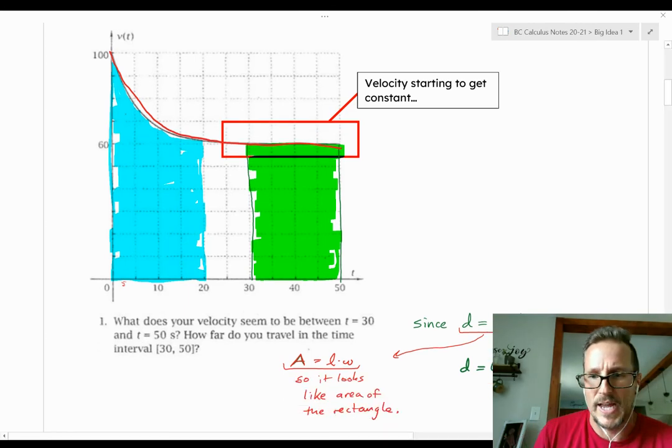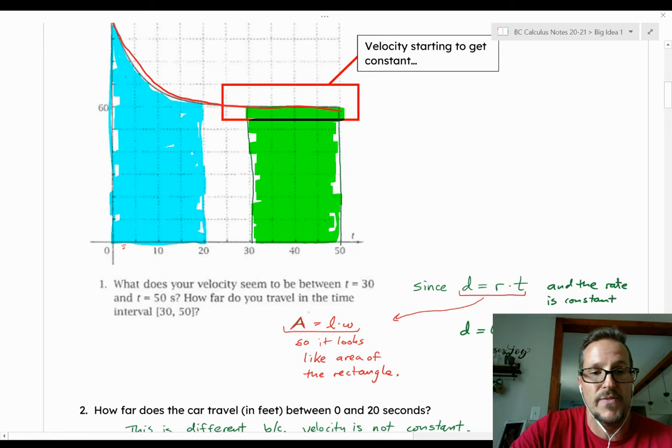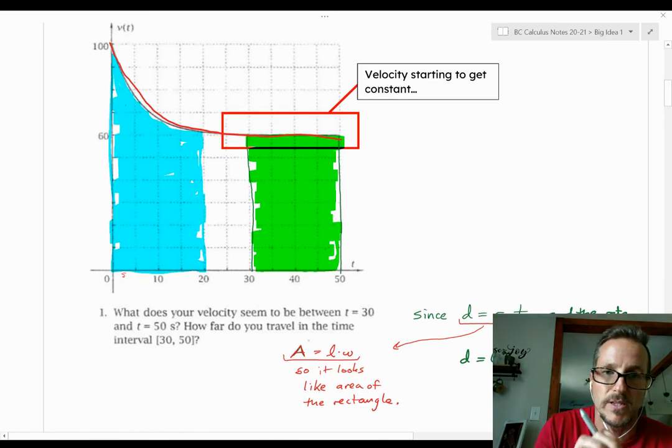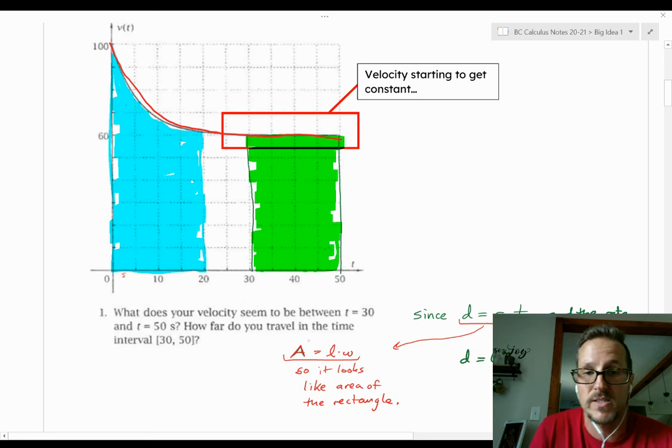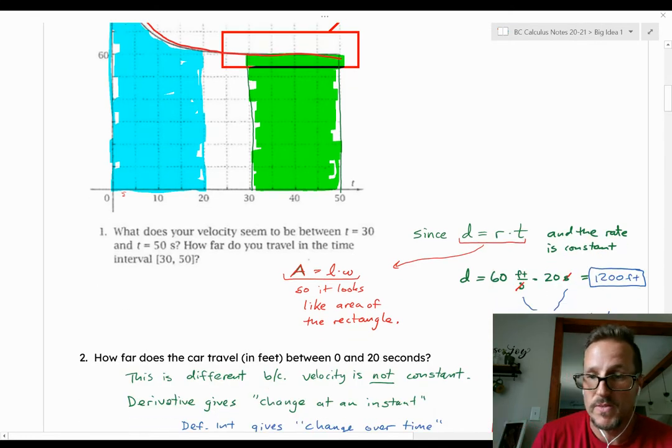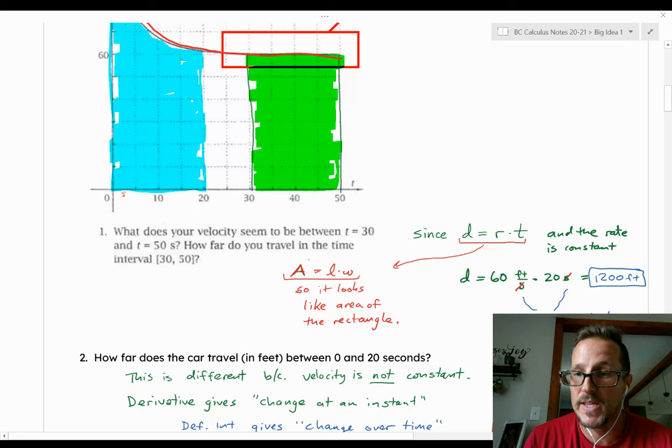So the first question we want to ask is, what does the velocity seem to be between 30 and 50 seconds? That velocity appears to be leveling out, meaning the velocity is getting constant on that time interval. So how far do you travel in that time interval? Well, a long time ago, I learned that distance is equal to rate times time. And rate times time, rate meaning velocity, time meaning the time interval that we go that speed. Since the rate is constant, we can simply multiply 60 feet per second times 20 seconds, cancel the units out, feet per second times seconds is feet, and get that we've traveled 1,200 feet on that time interval.